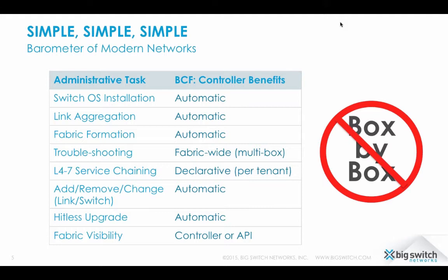While we talked about several BCF benefits, I would say BCF is synonymous with one word: simple. With configuration, automation, and troubleshooting done via the Big Cloud Fabric controller, the number of management consoles goes down dramatically compared to traditional box-by-box design. For example, a 16-rack traditional box-by-box network design would have 38 management consoles - in BCF, that has been cut down to one. This results in massive time savings, very high change velocity, central visibility, and a much simpler design for automation.